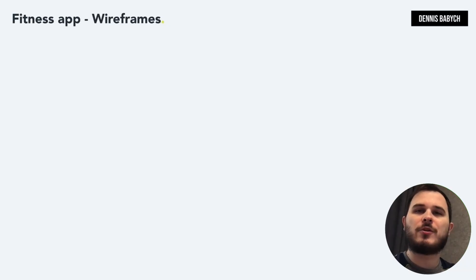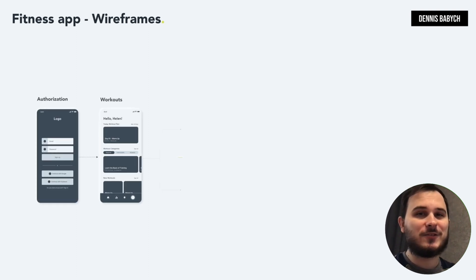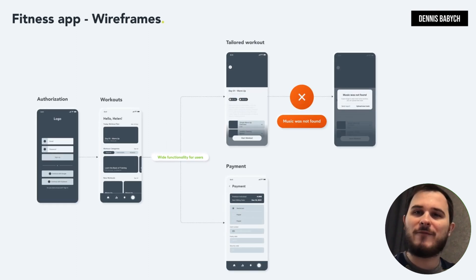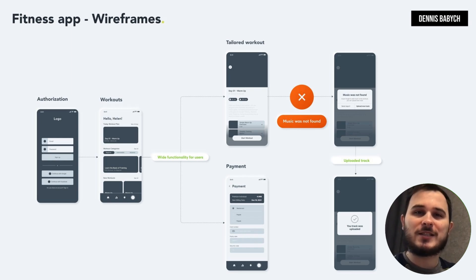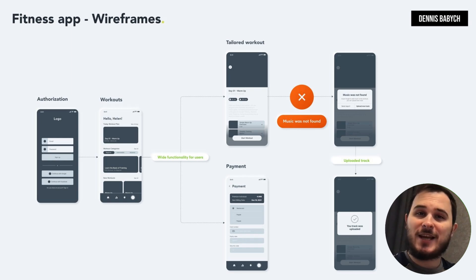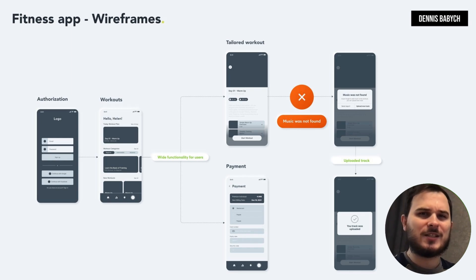Once you have finished your research on the value proposition and identified the essential features for your MVP, the next step is to create a wireframe map. This will assist you in arranging your concepts and ensuring that all user cases and scenarios are covered. For example, a fitness subscription platform could include basic use cases such as logging in, creating a tailored workout, and payment — as well as missing use cases, such as what should happen if a coach forgot to add music to their workout.